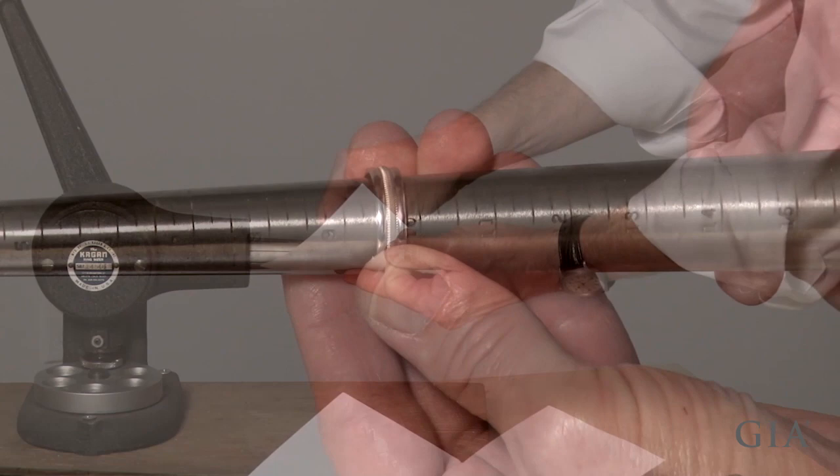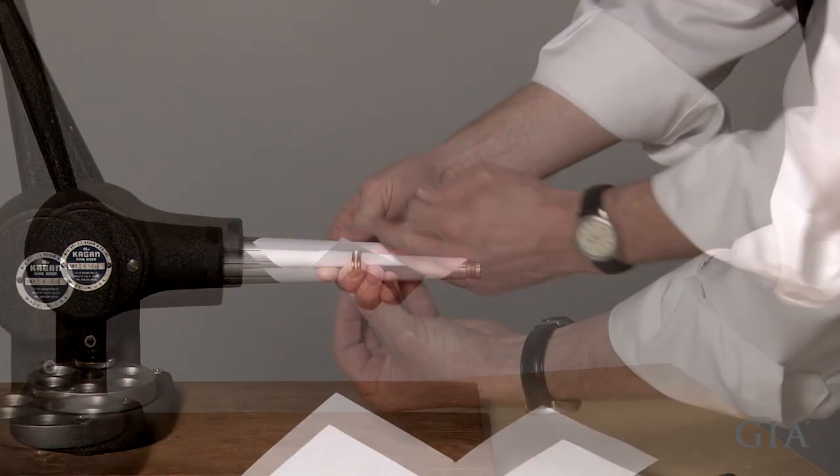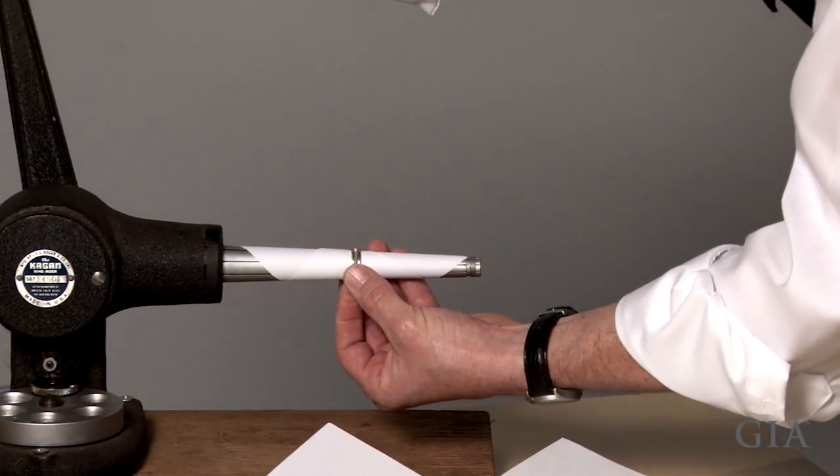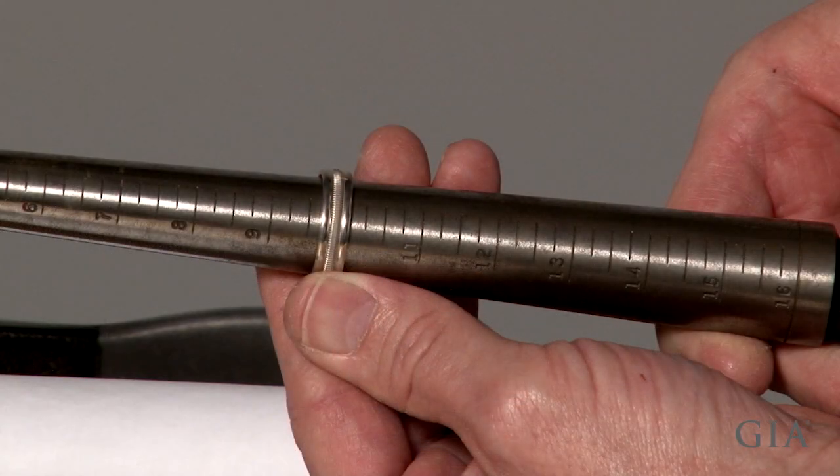Check the size, rewrap the paper, and continue stretching until the band covers the size ten marking on the ring mandrel.